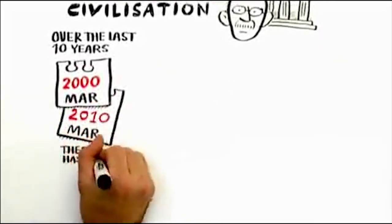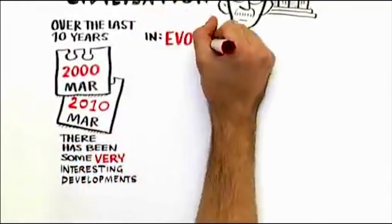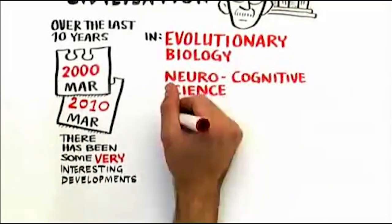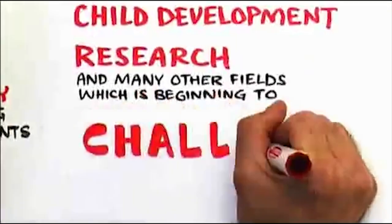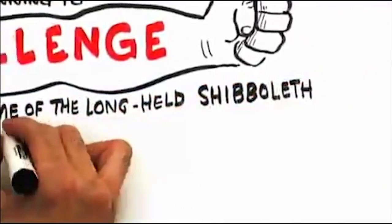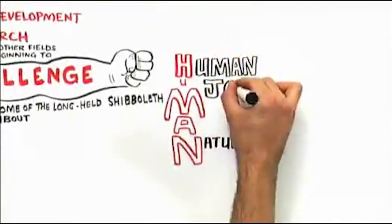In the last 10 years, there's been some very interesting developments in evolutionary biology, neurocognitive science, child development research, and many other fields, which is beginning to challenge some of these long-held shibboleths that we've had about human nature and the meaning of the human journey.